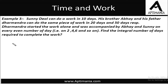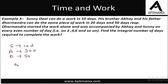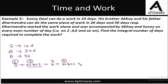Next question: Sunny Deol can do a piece of work in 10 days. His brother Abhay can do the work in 20 days and his father Dharmendra can do the same work in 50 days. Now Dharmendra started the work, so he was coming on the first day and was accompanied by Abhay and Sunny on every even-numbered day. So on the first day, which was odd, only Dharmendra was here. On the second day, which was even, all three were working together. On the third day again Dharmendra alone, on the fourth day all three together, on the fifth day Dharmendra alone, and on the sixth day all three working together.